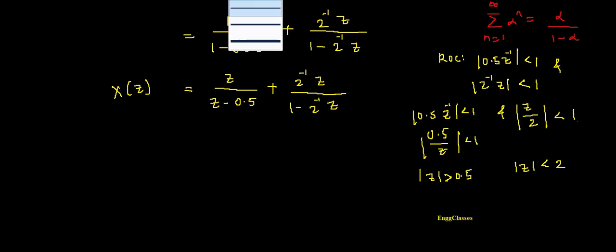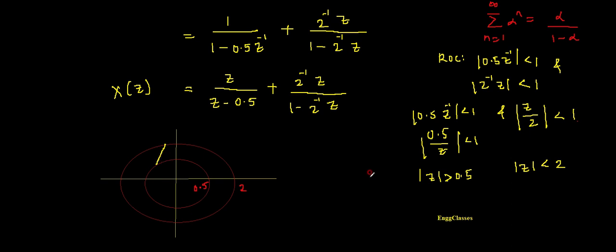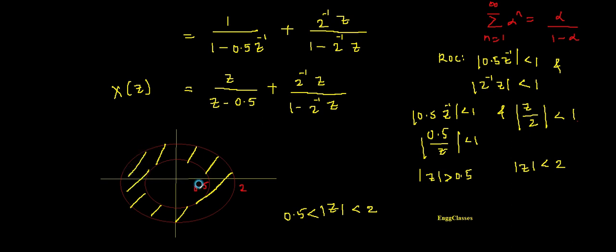Let me draw the ROC. Drawing the real axis and imaginary axis of z, I draw two circles: one with radius 0.5 and another with radius 2. The intersection region, where mod z is greater than 0.5 and less than 2, is the ROC. So the annular region between the two circles is the region of convergence.